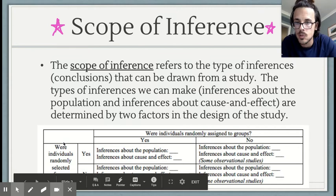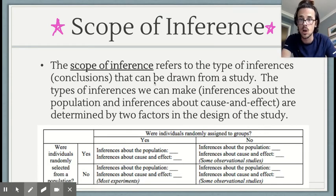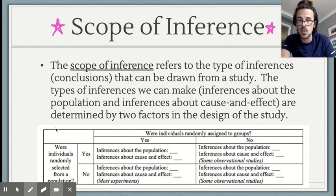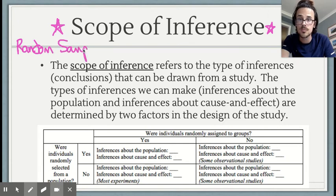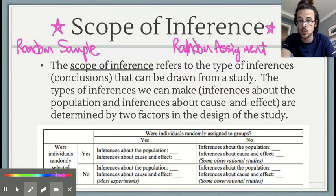Instead of filling out this table, I'm going to have you write down just the key points of scope of inference in your notes. There are two things we are concerned about with regards to scope of inference: we care about whether or not our data came from a random sample, and we care about whether or not we had random assignment. These two factors determine what you can do with your results.